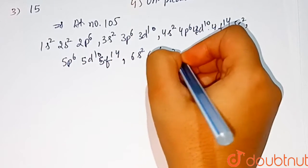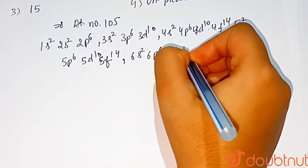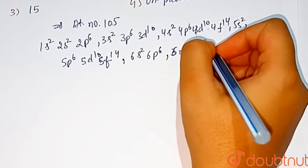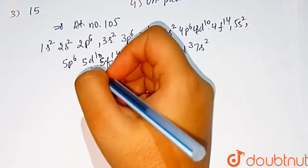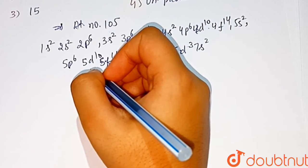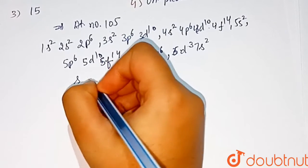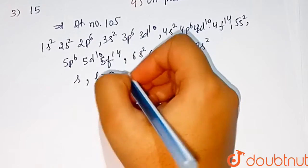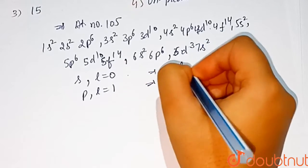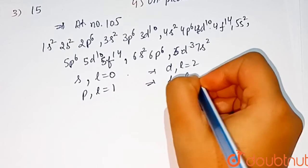Now, we know that angular quantum number of sub-orbitals are: for s, l equal to 0; for p, l equal to 1; for d, l equal to 2; for f, l equal to 3.